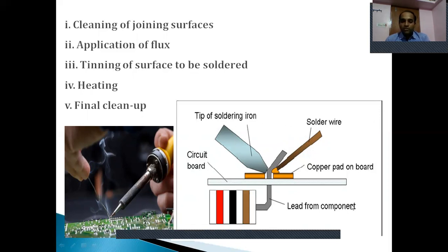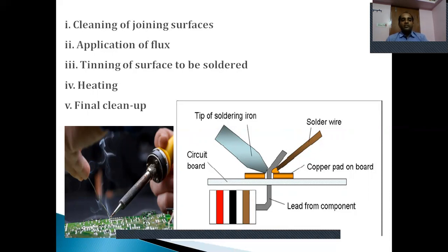The side picture shows the principle and method of soldering. The components used are: a circuit board, a soldering gun, a solder wire used to join the metal pieces, and some flux material. The first step is cleaning of the joining surfaces. When the two metal strips are taken for joining, before we go for joining we clean them, because on the surfaces there may be some dirt, dust, or other particles settled. If we don't remove these, the joining becomes incomplete, so first we clean the surfaces.